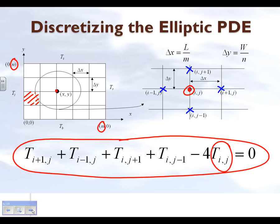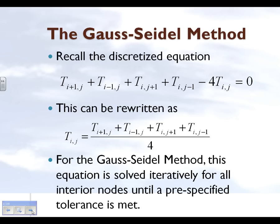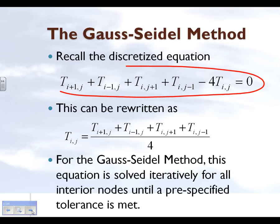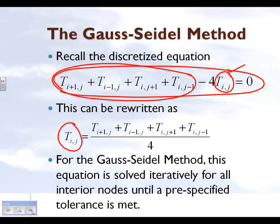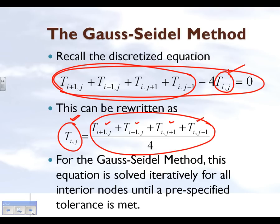That's what the discretized equation gives us. The Gauss-Seidel method is going to help us solve this discretized equation. We rewrite it in terms of the other four nodes, expressing T(i,j) in terms of its four surrounding nodes. It becomes an iterative process — Gauss-Seidel solves the equations iteratively until you meet a certain pre-specified tolerance. For more information on Gauss-Seidel, click the annotation at the bottom of the screen.